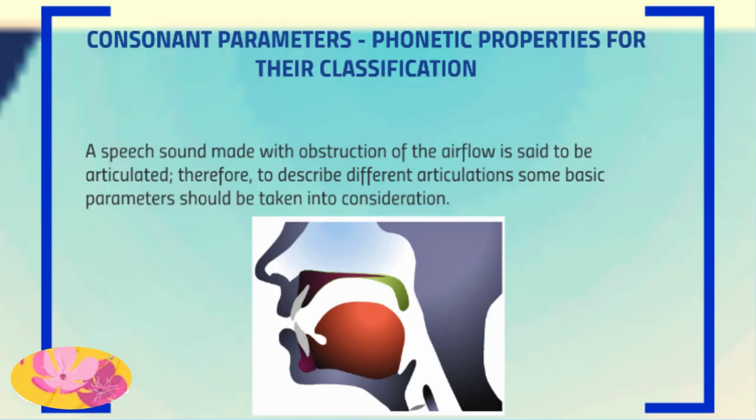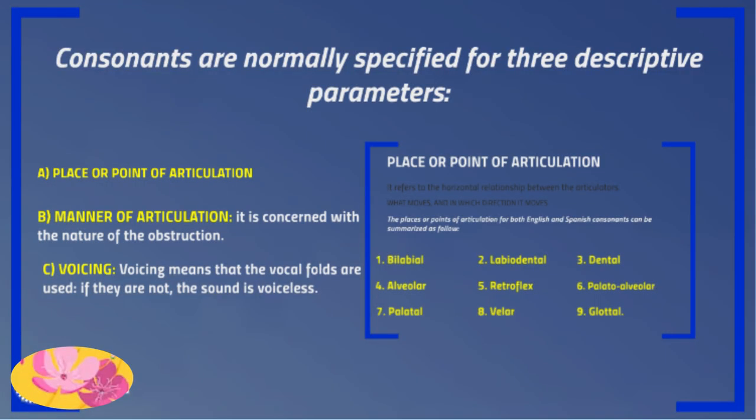Consonant parameters — phonetic properties for their classification: a speech sound made with obstruction of the airflow is said to be articulated. To describe different articulations, some basic parameters should be taken into consideration. Consonants are normally specified for three descriptive parameters: the place of articulation, manner of articulation, and voicing.